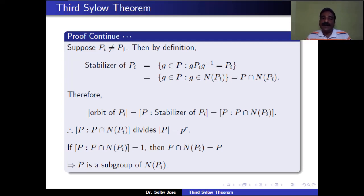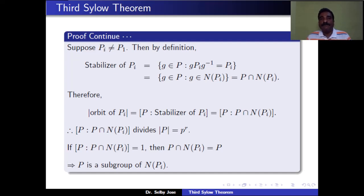What happens if this index equals 1? If the index of P ∩ N(Pi) in P is 1, then P and P ∩ N(Pi) have the same number of elements. Since P ∩ N(Pi) is a subset of P and both have the same cardinality, the two sets are equal. That means P ∩ N(Pi) = P, which implies P is a subset of N(Pi).